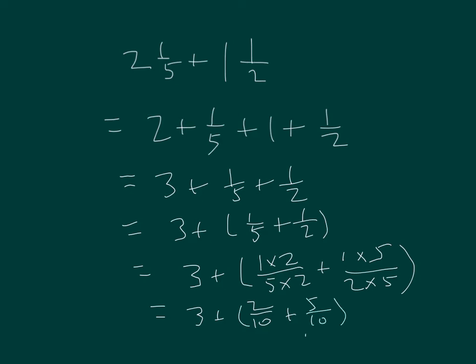So it equals 3 and 7 tenths. My sum is 3 and 7 tenths, and that is in simplest form. 2 and 1 fifth plus 1 and 1 half does equal 3 and 7 tenths.